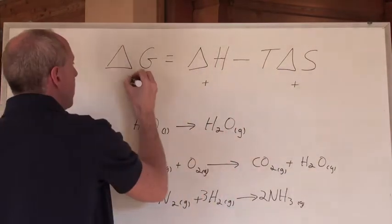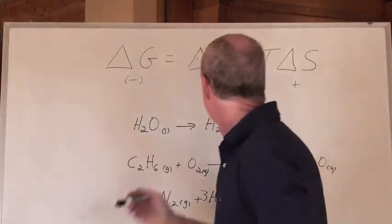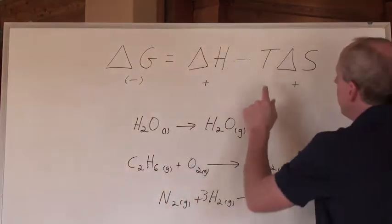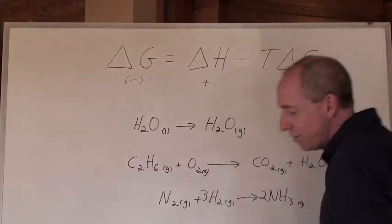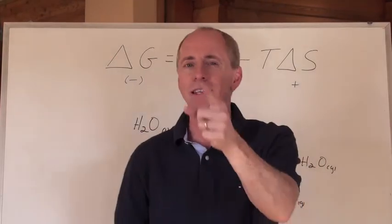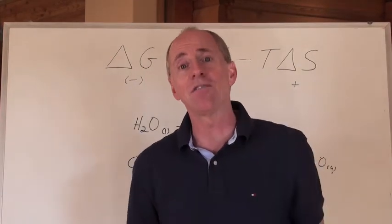In order to be spontaneous, the delta G value has to be negative. So what does that mean? Well, negative times, now the temperature. Oh, but what if the temperature is negative? Can't be negative. Why not? Because it's in Kelvins. Because Kelvins bottoms out at zero and you can't have zero Kelvin, right?